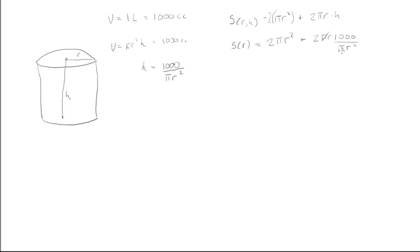The π's cancel out and one r cancels. This term simplifies to plus 2000/r.